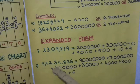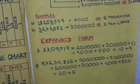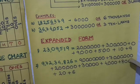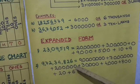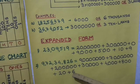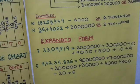The second example: 9 crores 72 lakh 34 thousand 8 hundred 26. Expanded form: 9 crores + 70 lakhs + 2 lakhs + 30,000 + 4,000 + 800 + 20 + 6. Today we have studied the Indian place value system, the international place value system, how to write number names, how to write place value, and how to write numbers in expanded form. I hope you all enjoyed. Stay home, stay safe. Thank you.